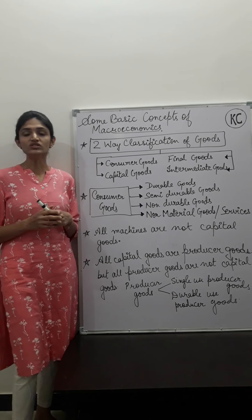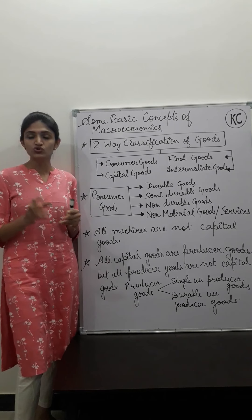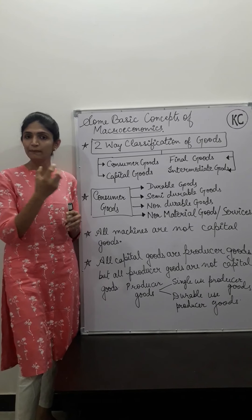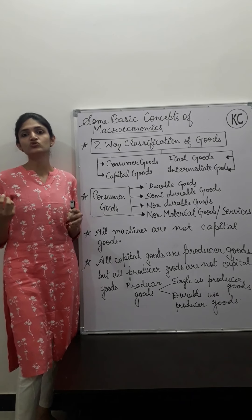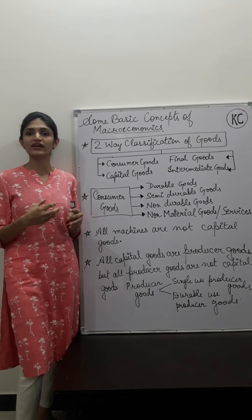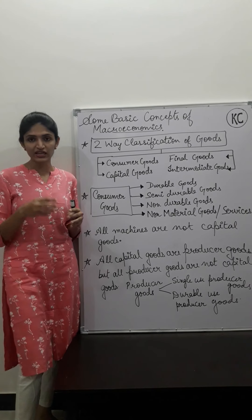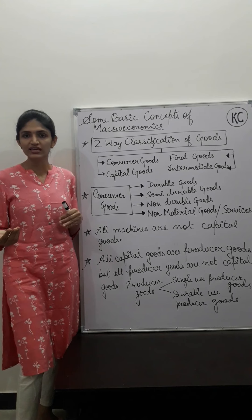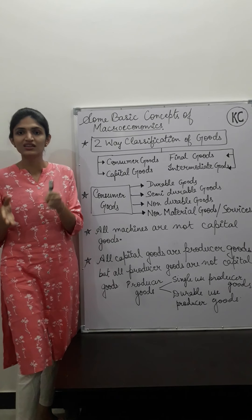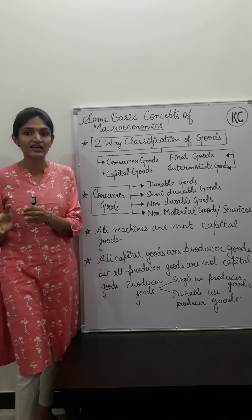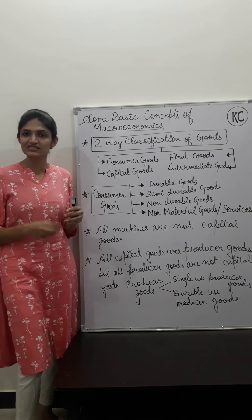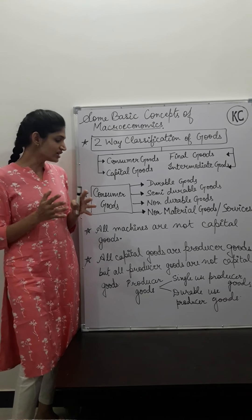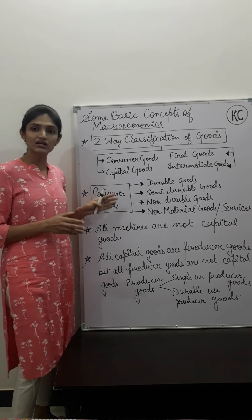What are consumer goods? These are goods meant for final consumption in the market — goods that you purchase and use as a final consumer. After these goods are purchased, they no longer undergo further production. They do not re-enter the production process. Such goods available in the market for end use are known as consumer goods.